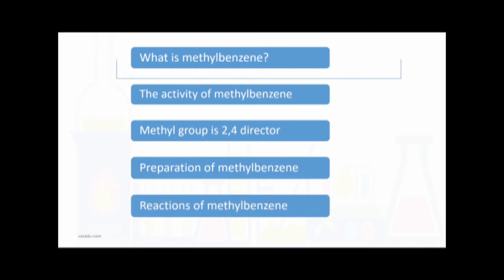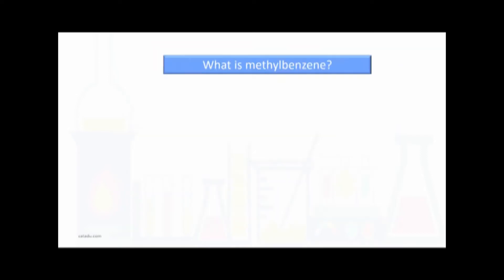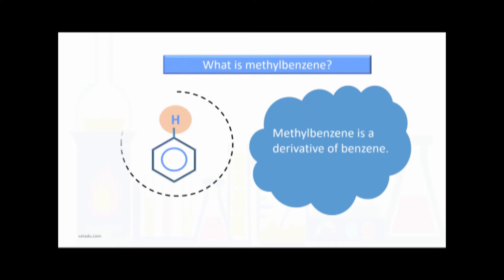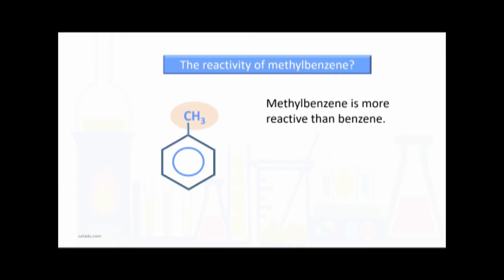What is methylbenzene? Methylbenzene is a derivative of benzene where a hydrogen of benzene is replaced by the methyl group. So methylbenzene is produced by replacing a hydrogen on the benzene ring with a methyl group.